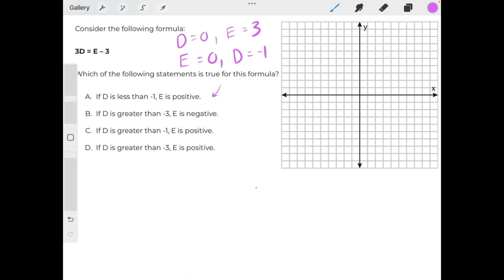For the purposes of this problem, let's call the y-axis our d-axis, and let's call the x-axis our e-axis, and plot these points. When d is 0, e is 3. When e is 0, d is negative 1.